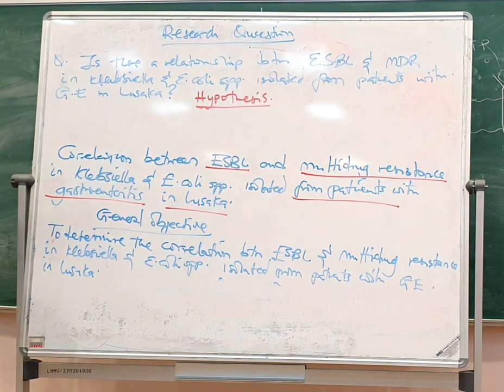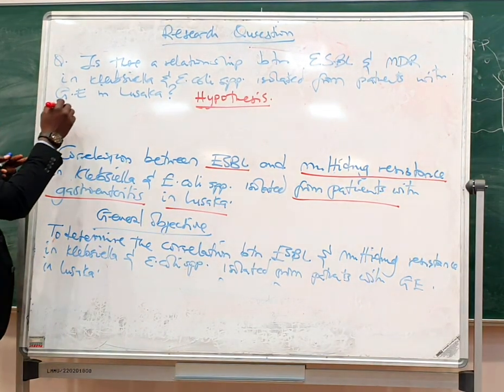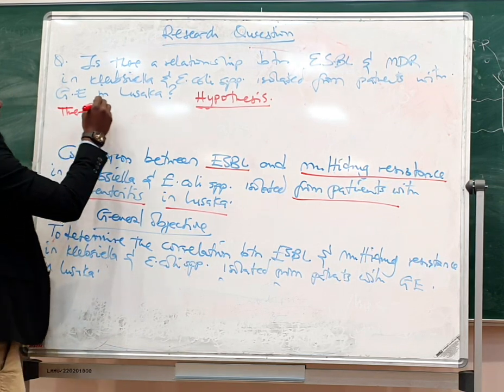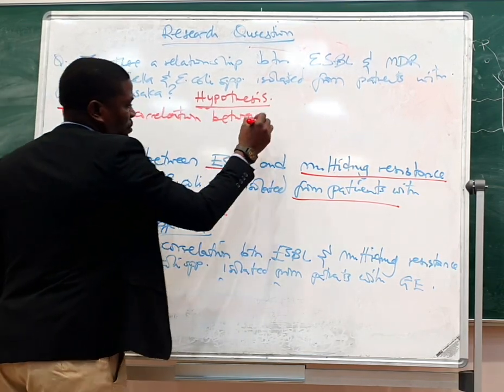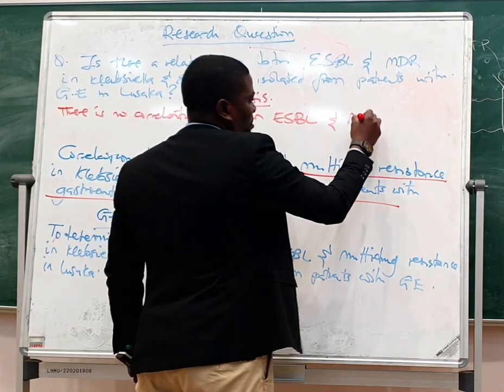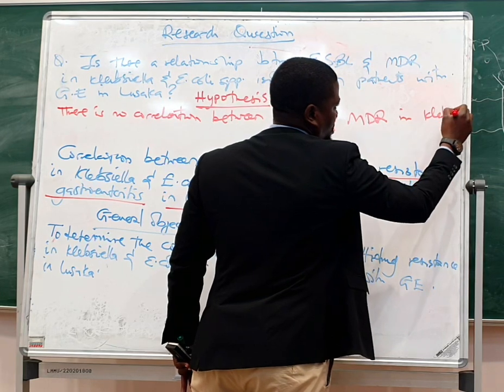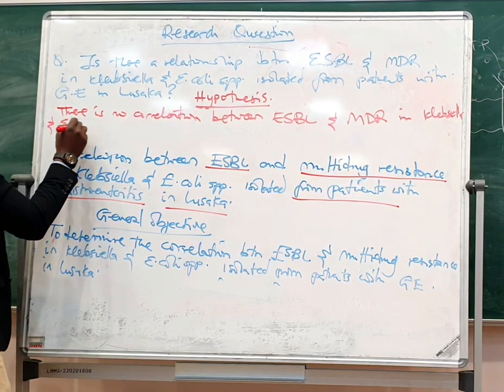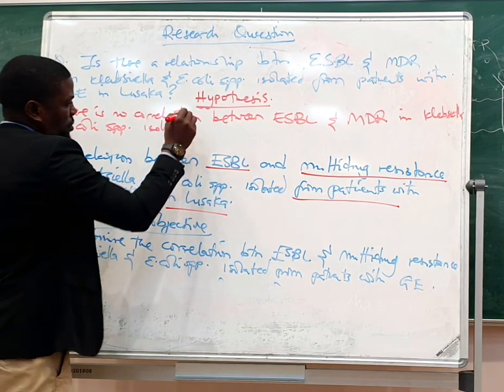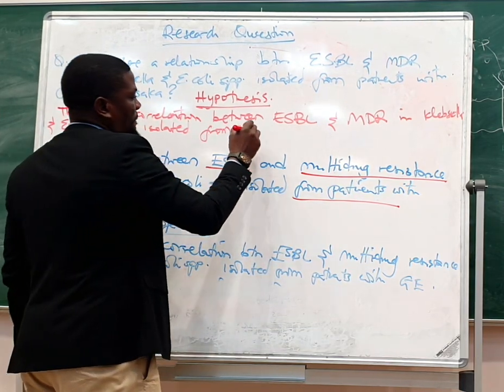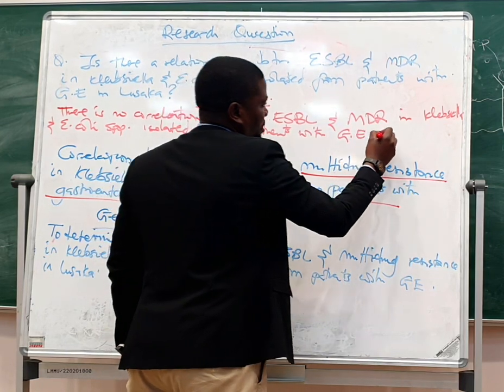Do you see how things are actually flowing from there? I think this is something you really need to write even as you are working on it. You make sure that these are actually written in that manner. So your null hypothesis is that there is no correlation between ESBL and multi-drug resistance in Klebsiella and E. coli species isolated from patients with gastroenteritis in Lusaka.